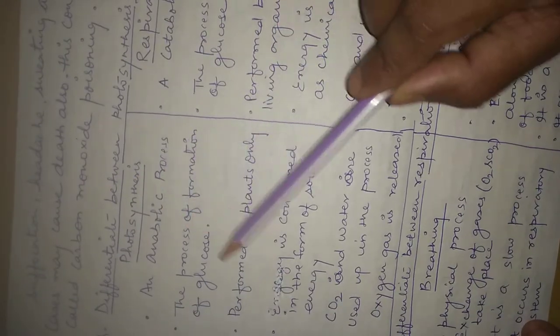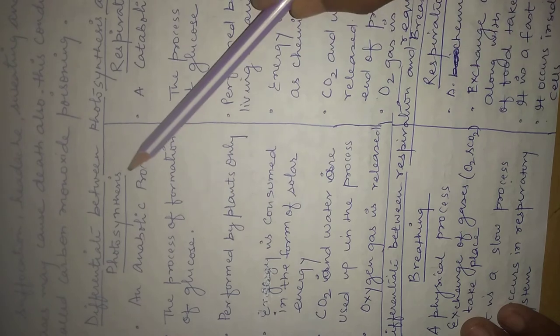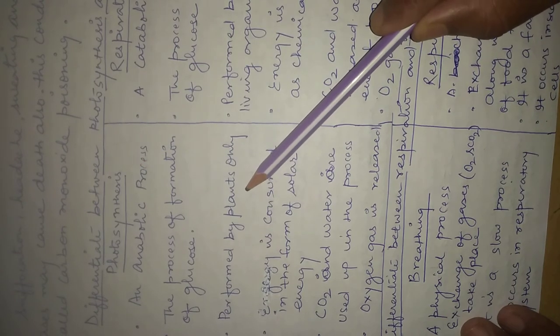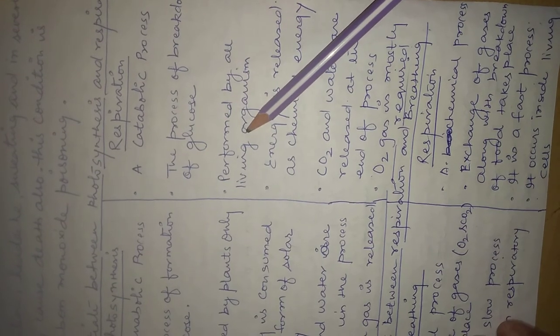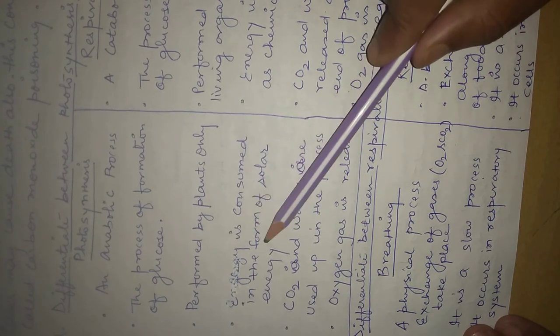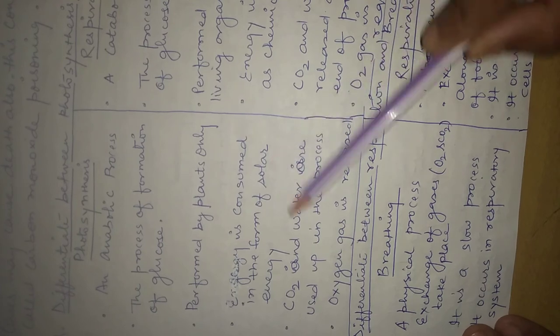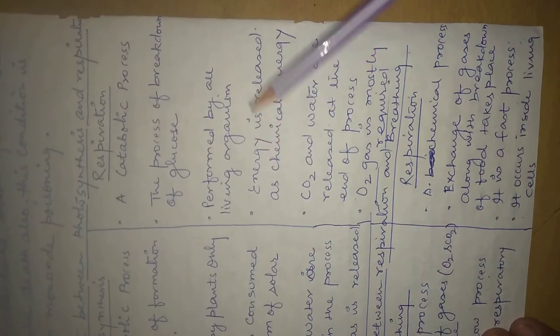In photosynthesis glucose is formed, but in respiration glucose is broken down। Photosynthesis process केवल plants पर perform करती है, जबकि respiration की process हर तरीके के living organisms में होती है। Photosynthesis की process में energy consume होती है in the form of solar energy — photosynthesis में sunlight absorb करती है chlorophyll molecule — जबकि respiration की process में energy consume नहीं होती, बल्कि energy released होती है।